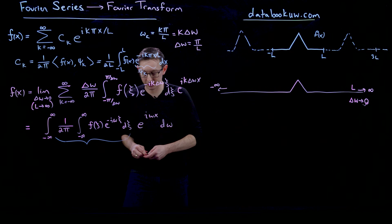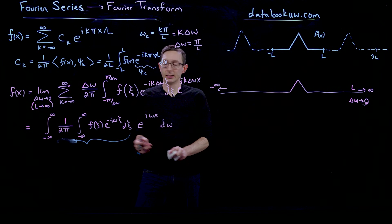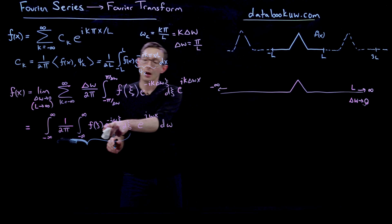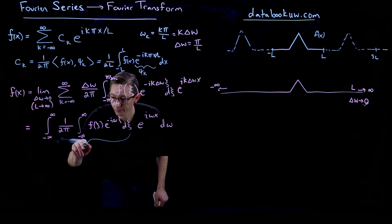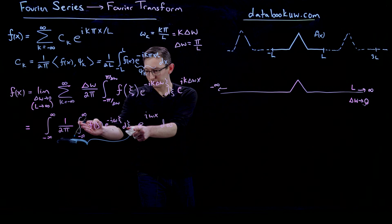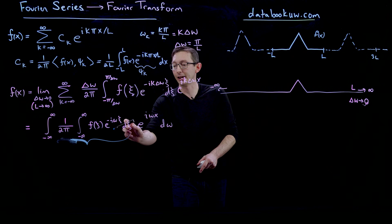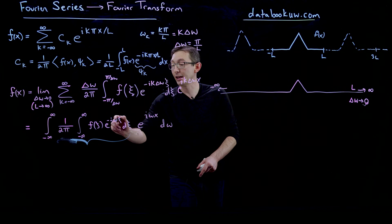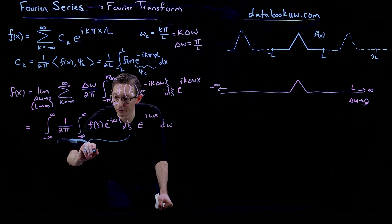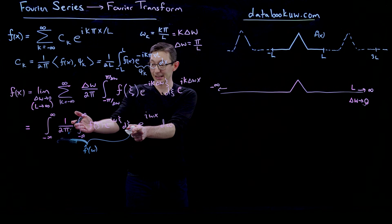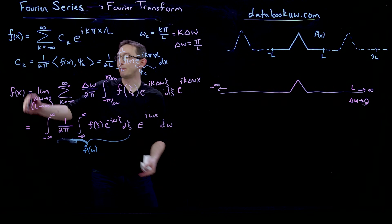This whole inner expression — the integral of f with respect to that basis function — is just the inner product of f with that basis function, which I'll call my Fourier coefficients. I take my function f(x), integrate x out, and all that's left is a function of ω. I'm going to call this f̂(ω) — that's my Fourier transform. Then all of this outer structure is my inverse Fourier transform, which takes me back to f(x).